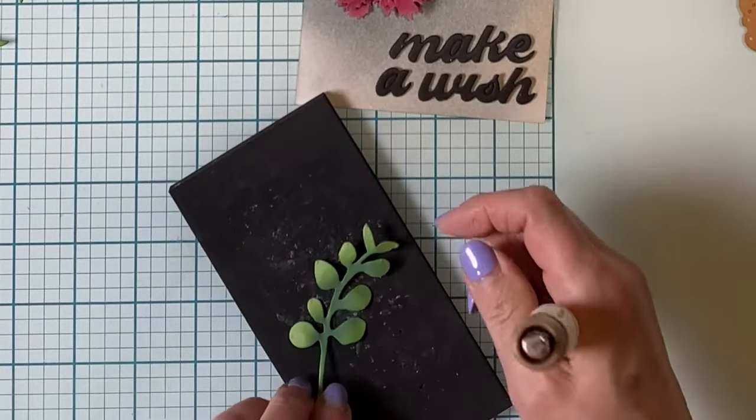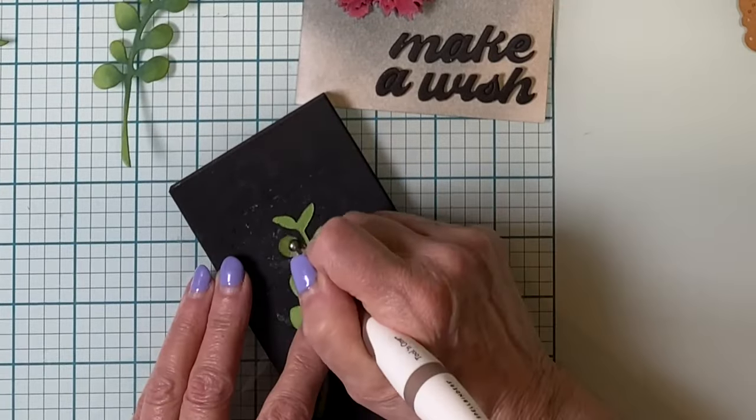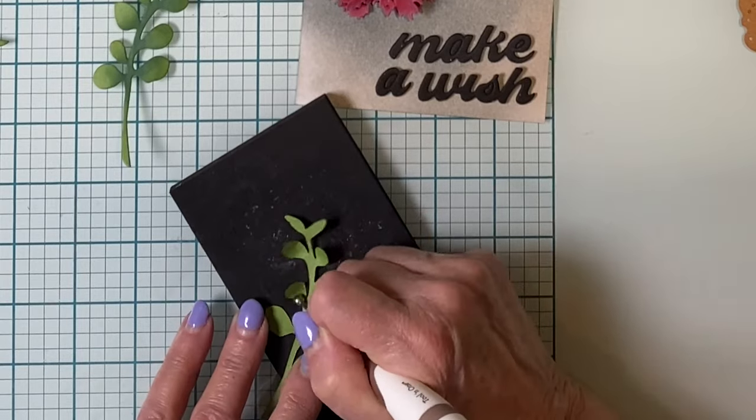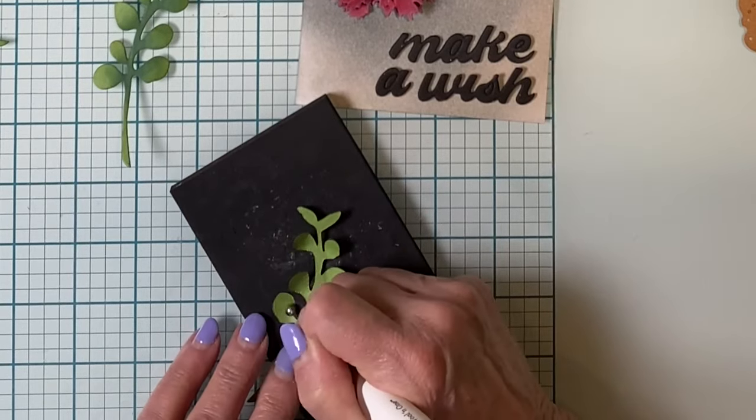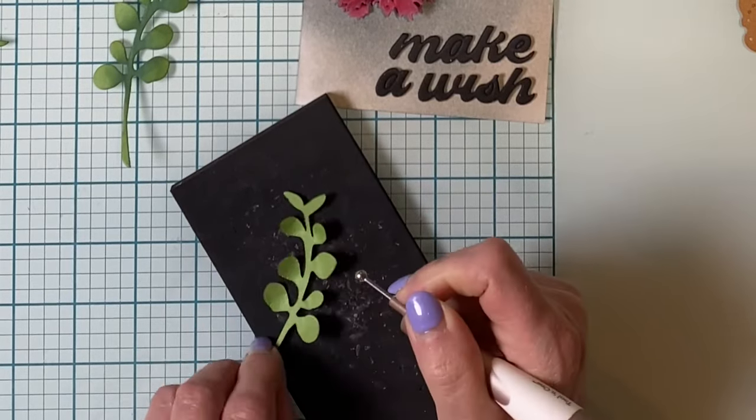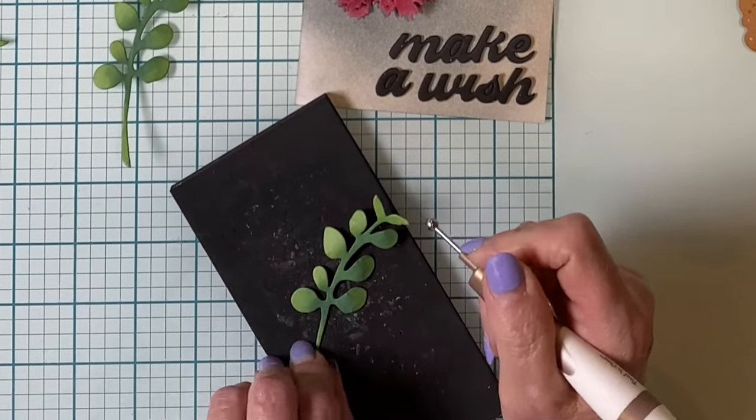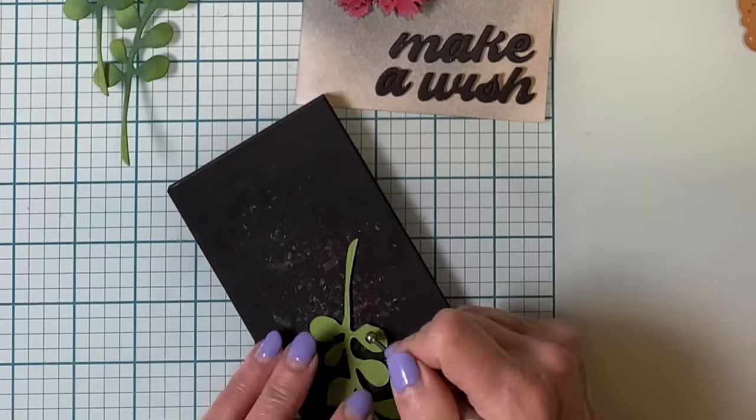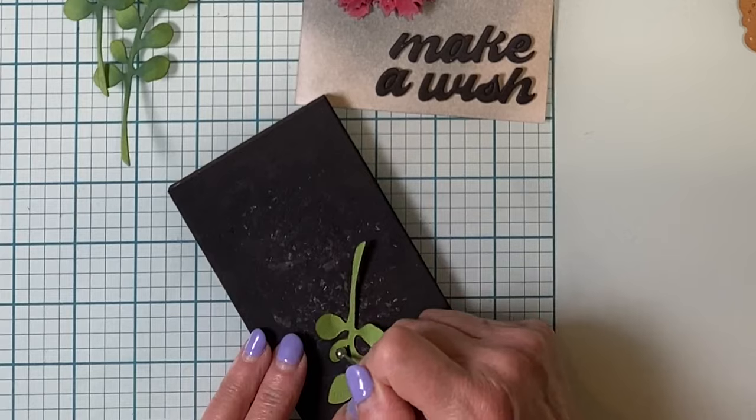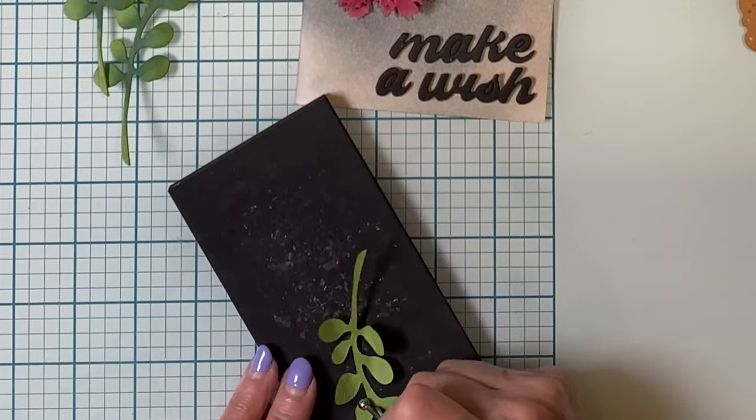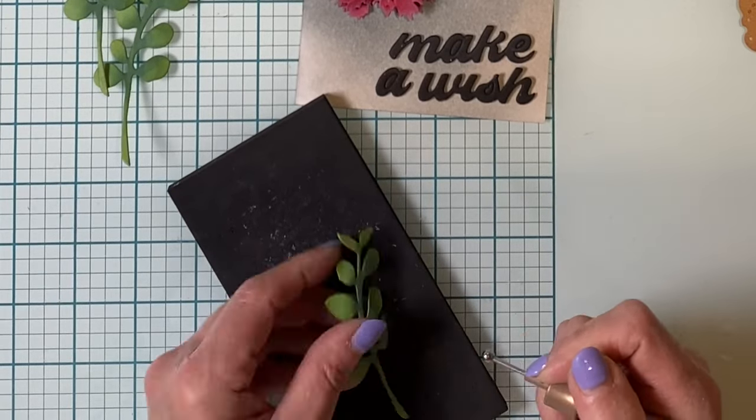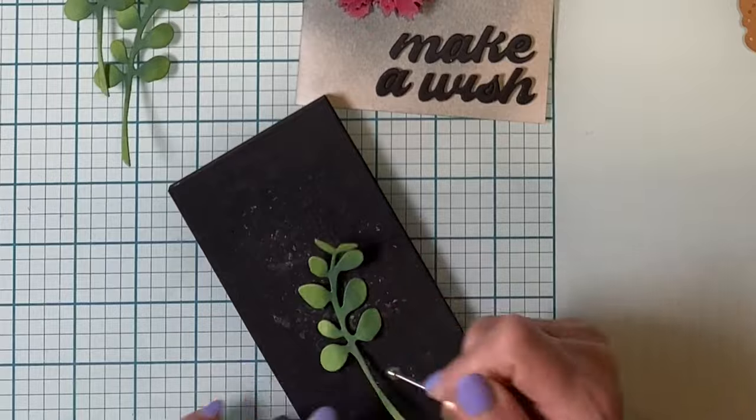Before I start assembling the card front, I'll first add a little bit of shape to the leafy sprigs from the Victorian Garden foliage die set. I'm just using the ball tool in a circular motion on the back of those little oval leaves. And then on the right side, the ball tool is used again to depress it at the base of each of the leaves just to make them pop up.